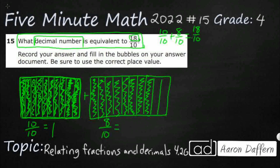Now, what is this equal to as a decimal? Well, I need to be thinking of my place value. There's the ones place — I have one whole. And then the first place value after the decimal point is the tenths place. So this is the big learning in 4th grade: eight over ten equals 0.8. If I put those together, it's going to be one and eight-tenths, so that's what we bubble in.